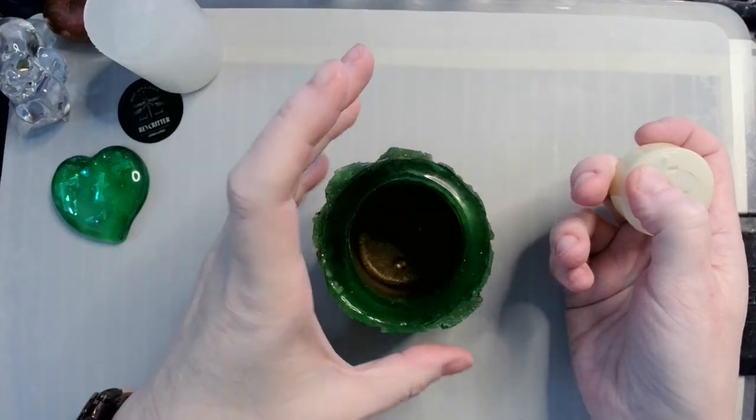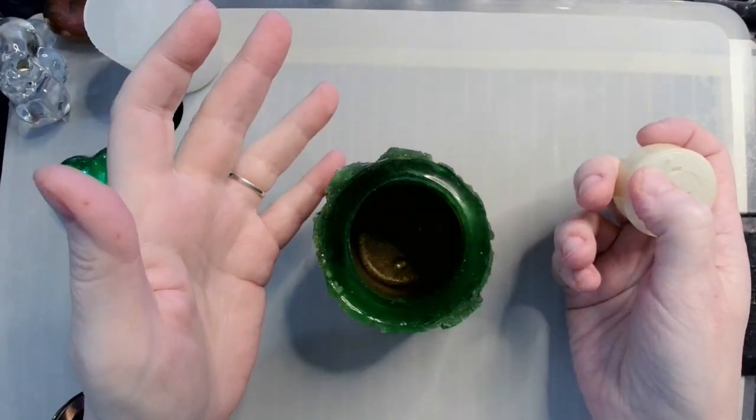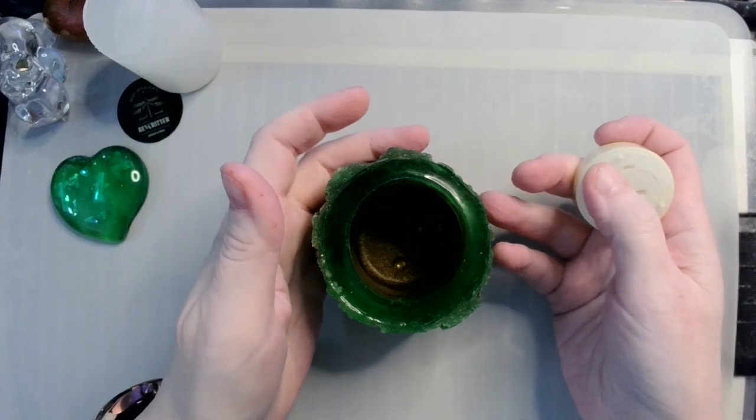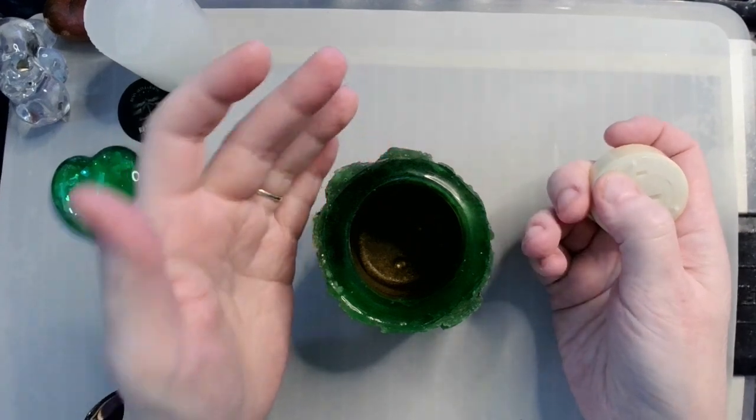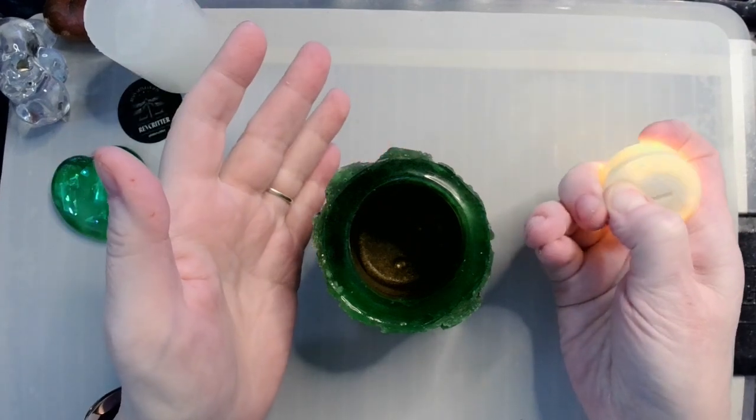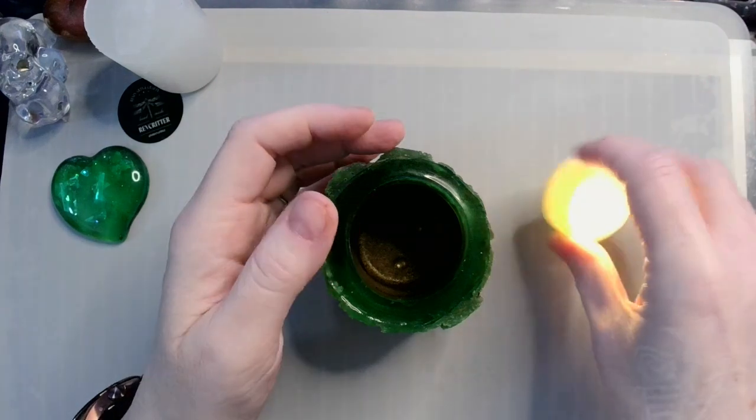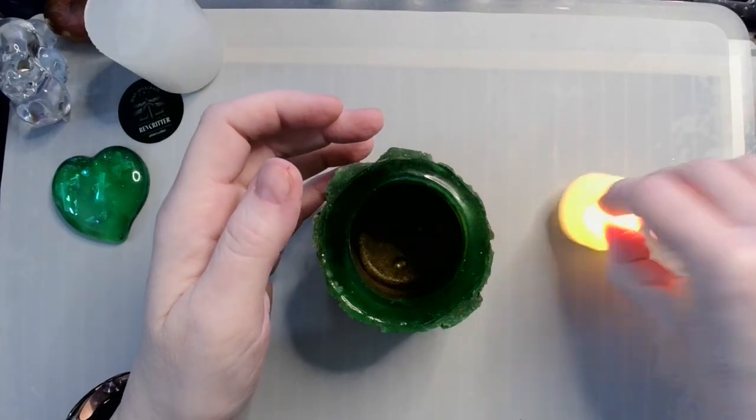The resin will get way too hot. It can potentially burn. So if you are going to use resin to make tea light holders or candle holders or whatever, please just use LED lights.